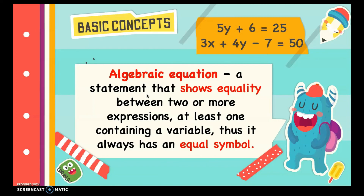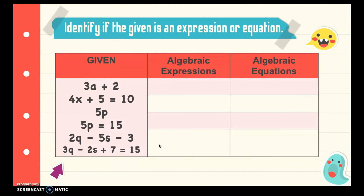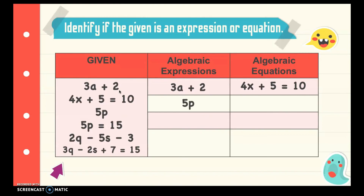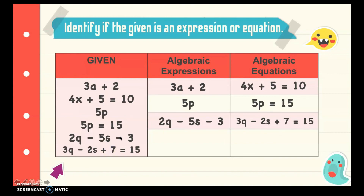Let's identify whether each given is an expression or an equation. 3a + 2 — that's an expression. 4x + 5 = 10 — that's an equation. 5p — expression. 5p = 15 — equation. 2q minus 5s minus 3 — expression. 3q minus 2s + 7 = 15 — that's an equation. I hope you learned something from our lesson about the basic concepts of algebra.